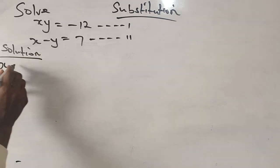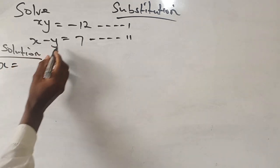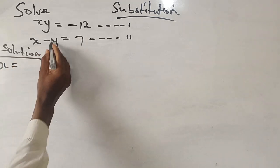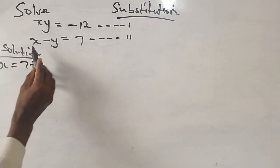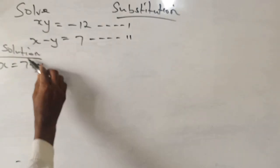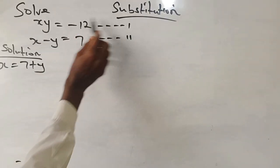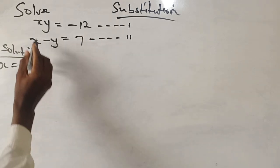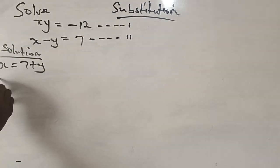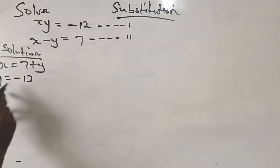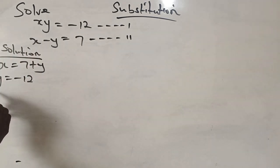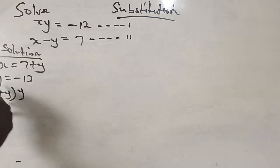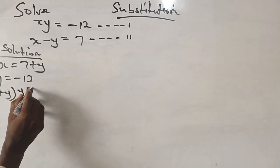For x to be the subject of the formula, I have to rearrange, so I have x equals 7 plus y. Now that x is the subject of the formula, I can substitute it back into equation 1. So for equation 1, I have x times y equals minus 12, and for x I substitute 7 plus y.